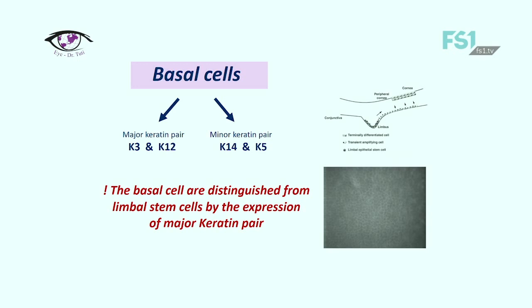Basal cells contain a major keratin pair and a minor keratin pair. The basal cells are distinguished from limbal stem cells by the expression of the major keratin pair. This is a single layer of cuboidal cells, and as mentioned, they originate from stem cells of the limbal epithelium which are in the periphery of the cornea. They also contain glycogen.